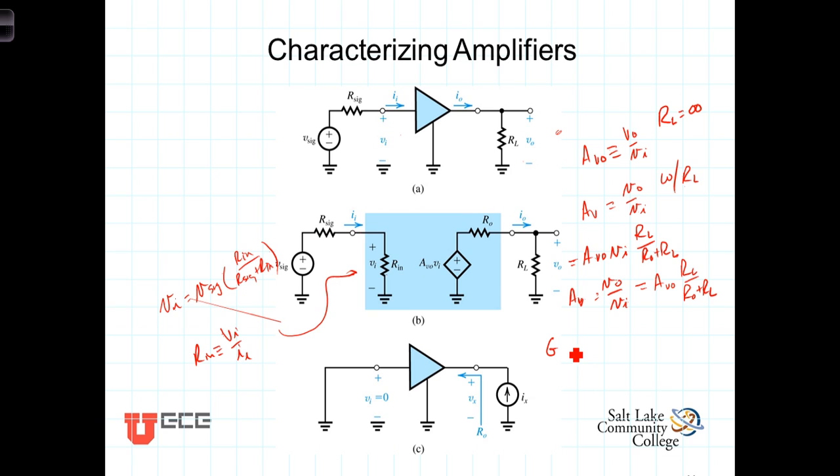The overall gain is defined as Vout over V signal with the load connected. The output resistance R0 is the resistance seen looking into the output of the amplifier when the signal has been deactivated. So it's just the Thevenin resistance of the amplifier looking back into it with the source deactivated.